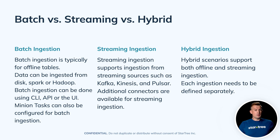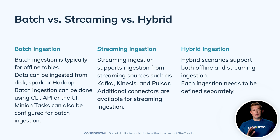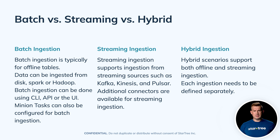There are some scenarios where both offline and streaming ingestions can be applicable for a particular table. With batch ingestion, you typically use offline tables. Data can be ingested from disk, Spark, or Hadoop. Ingestions can be configured through CLI, Pinot admin, API, or even through UI. Minion tasks can also be configured for batch ingestion — we're going to talk about minions in a corresponding module very soon.